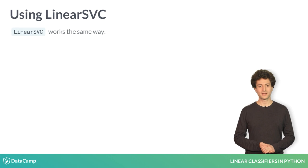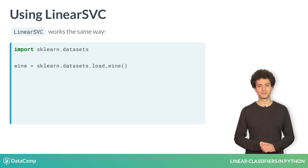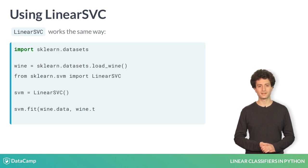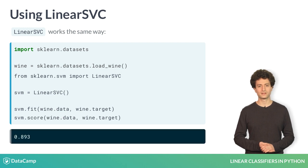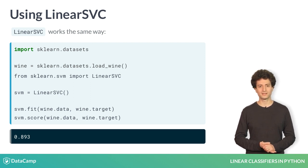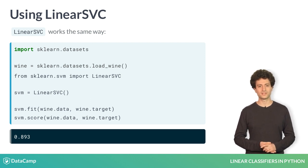In scikit-learn, the basic SVM classifier is called LinearSVC, for Linear Support Vector Classifier. The LinearSVC object works exactly the same way as Logistic Regression. Note that this dataset has more than two classes — scikit-learn's Logistic Regression and SVM implementations handle this automatically. We'll talk about how this works in Chapter 3.